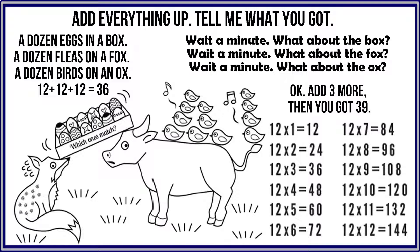Tell me what you got: a dozen eggs in a box, a dozen fleas on a fox, a dozen birds on an ox. 12 plus 12 plus 12 is 36. Wait a minute — what about the box? Wait a minute — what about the fox? Wait a minute — what about the ox? Okay, add 3 more, then you got 39.